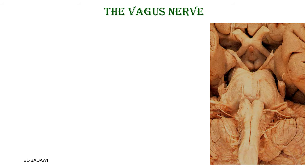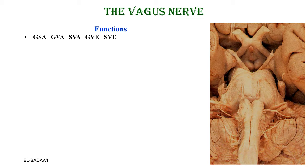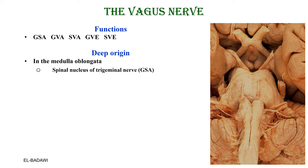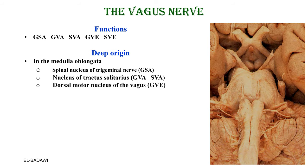Now we come to the vagus nerve. The vagus nerve has the same five functions as the glossopharyngeal: general somatic afferent, general visceral afferent, special visceral afferent, general visceral efferent, and special visceral efferent fibers. The deep origin is from the same nuclei in the medulla oblongata, except the parasympathetic nucleus — the dorsal motor nucleus of the vagus replaces the inferior salivatory nucleus — and the nucleus ambiguus for the special visceral efferent fibers.